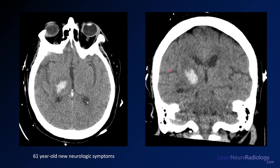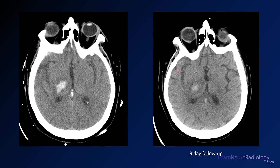Here's a 61-year-old presenting with new neurologic symptoms. In the right thalamus you've got a hyperdense structure, pretty well-defined but significantly denser than the surrounding brain, with some edema around it. The coronal images confirm the same — right thalamus, some edema, a little bit of local mass effect. This is a very classic appearance for a hypertensive hemorrhage in the thalamus. About nine days later, that hemorrhage has become smaller, less dense, less well-defined, with decreasing mass effect — very typical evolution of a hypertensive thalamic hemorrhage.